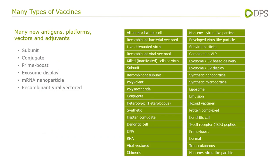On the right-hand side, we see examples of all the different types of vaccines that exist today. There are subunit vaccines — an actual piece of the pathogen, not the entire bacteria or virus — and we develop an immune response to that particular section. There are conjugate vaccines where we take a piece of the pathogen and bind it to something larger to give a better response. There are prime-boost systems where we use two different types of vaccines. And there are exosome display vaccines where we take an extracellular vesicle and put a subunit of the original pathogen on its surface to give a better response.